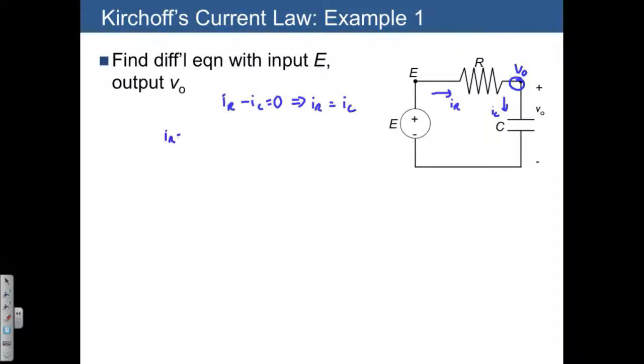If we apply the element laws, we have IR is equal to 1 over R times E minus V0, and the current going through the capacitor is C times S times the voltage drop across the capacitor, which is V0 minus zero. Since these two are equal, we just set them equal to each other.